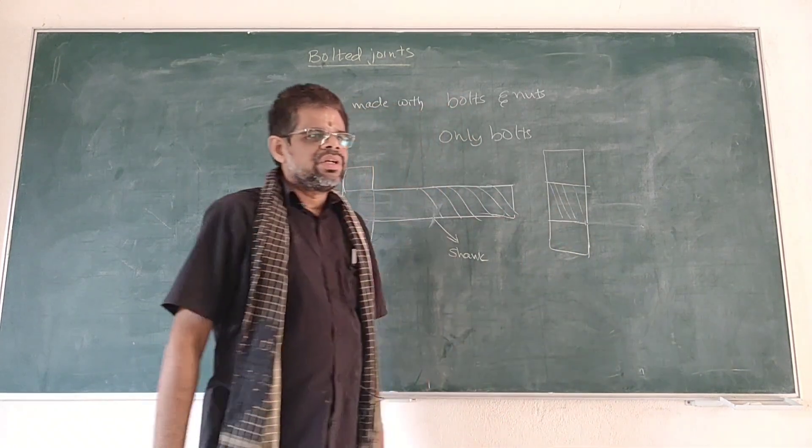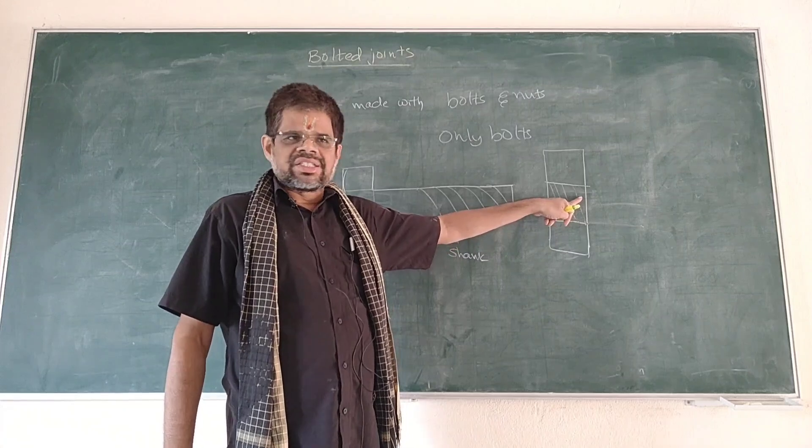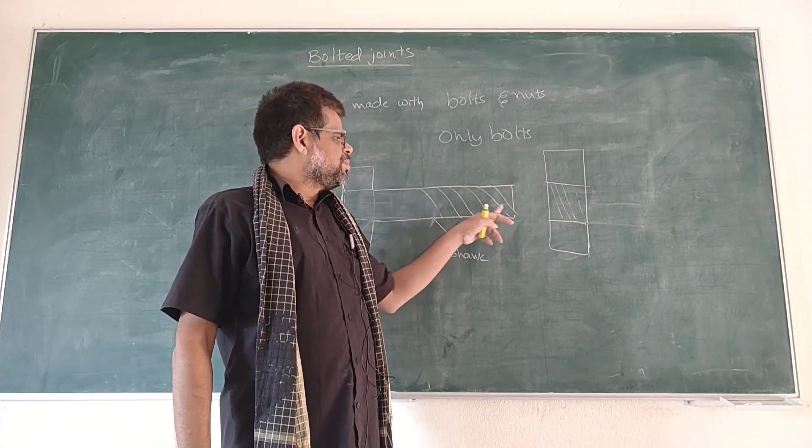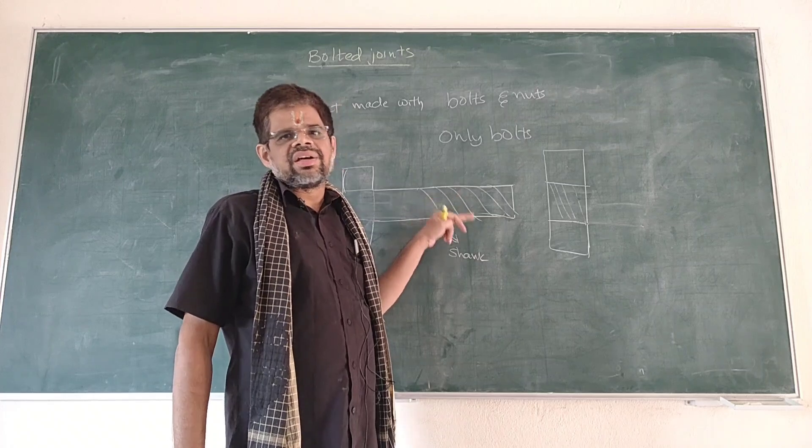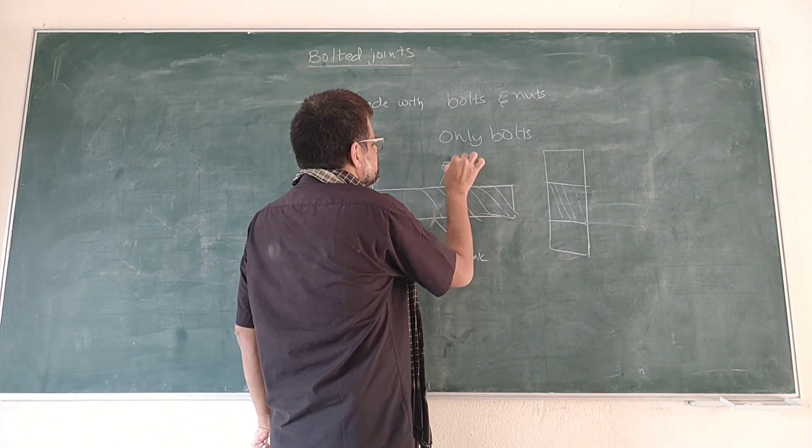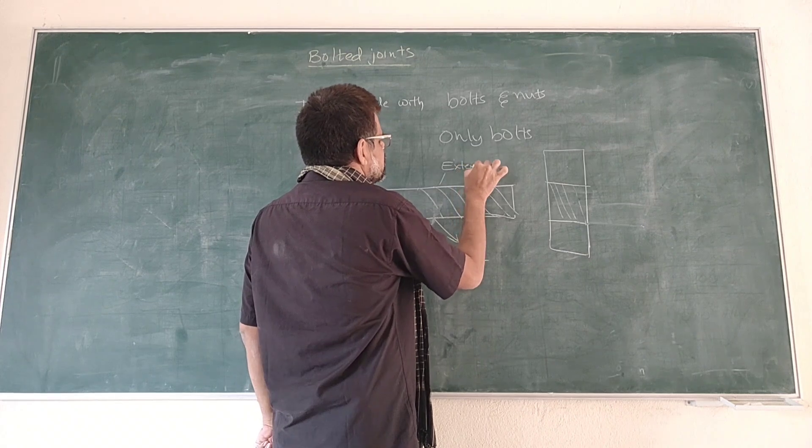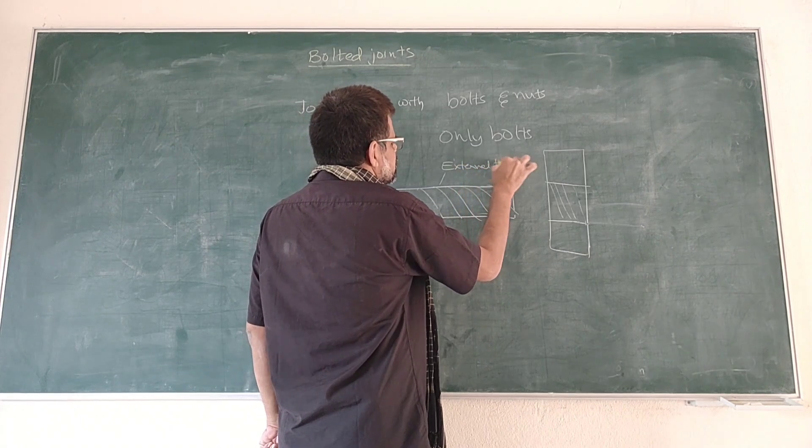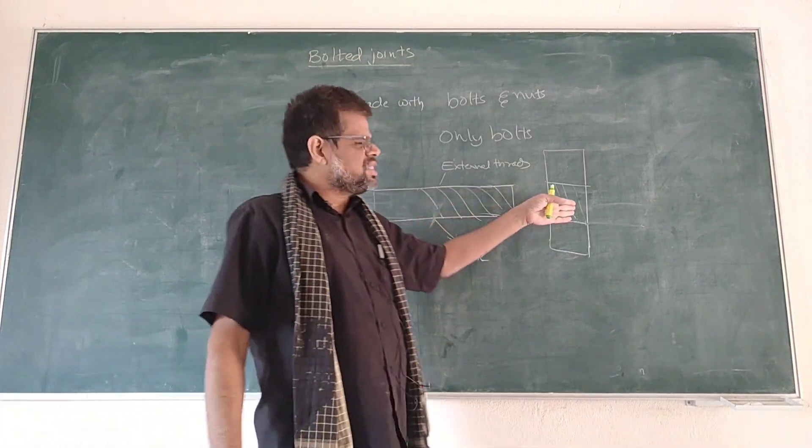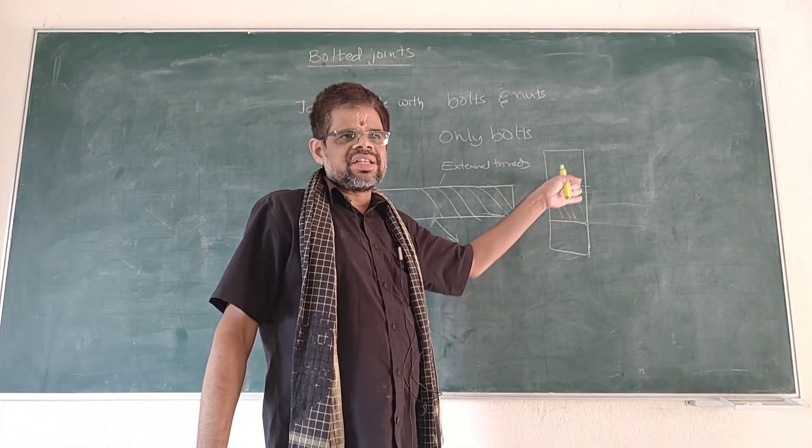Yes, this hole consists of threads. Those threads are called internal threads. Here the bolt consists of threads on its surface, so they can be seen directly. But you cannot see the internal threads in the nut unless you cut it, unless you section it. So this is bolt and nut.